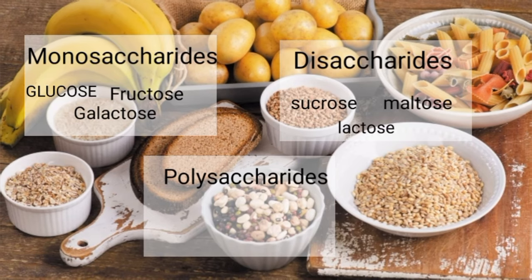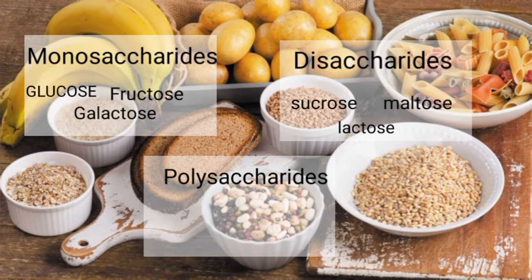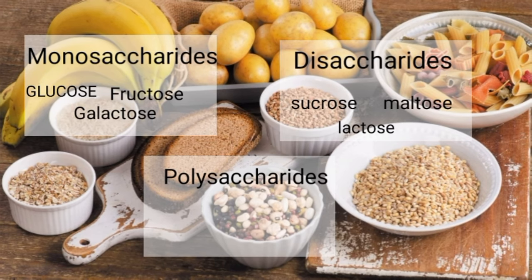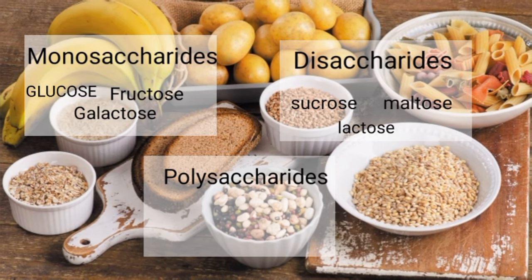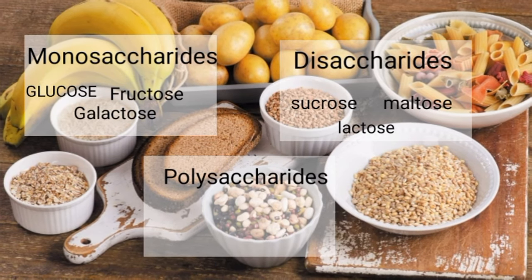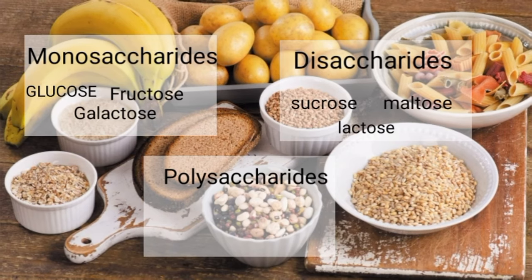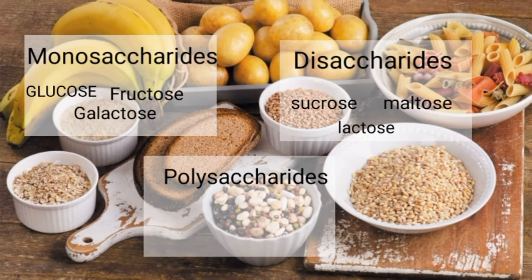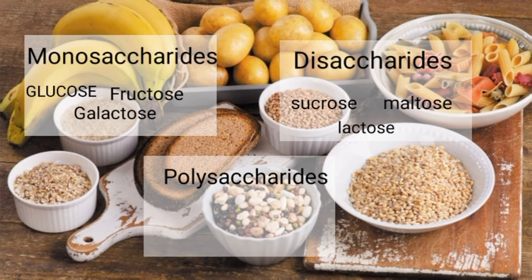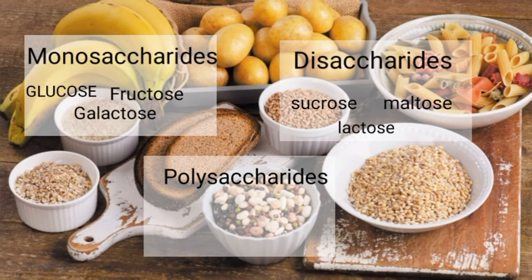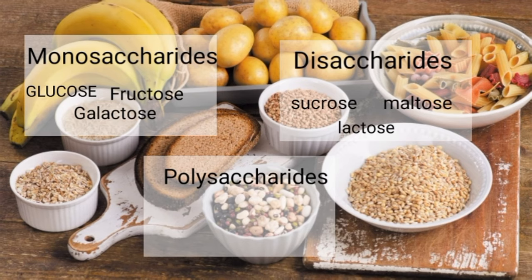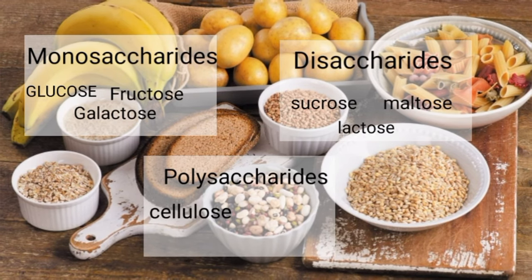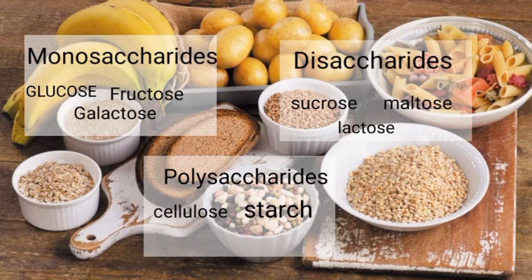Lastly, polysaccharides are similar to disaccharides in that they are formed through the condensation process, but involve hundreds of monosaccharides to form long molecular chains. Polysaccharides can also be broken down through hydrolysis with the help of dilute acid, boiling, and enzyme action. Examples of polysaccharides include cellulose, starch, and glycogen.